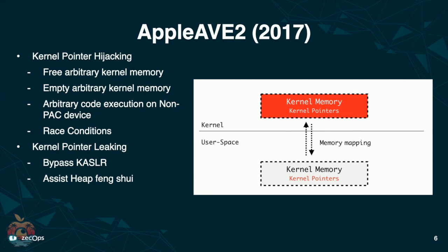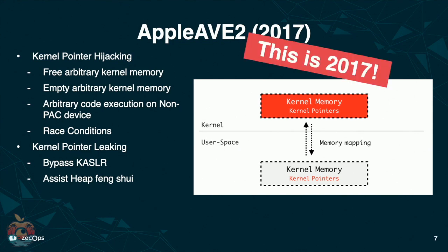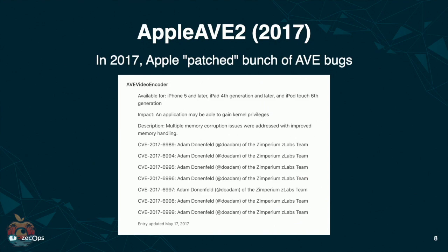Apple Video Encoder writes kernel pointers directly into the memory shared with user space, which creates all kinds of issues. This alone is enough to achieve code execution on devices not protected by pointer authentication. I want to emphasize something more interesting: the date here is 2017. In 2017, Apple patched a bunch of bugs from this same driver. Adam published a post and presented at Black Hat talking about it. He pointed out their weaknesses and how easy it is to exploit them. And since then, nobody ever mentioned this driver again.